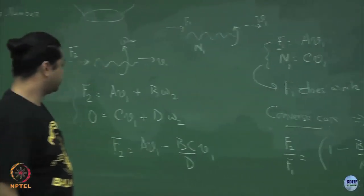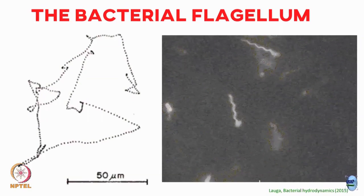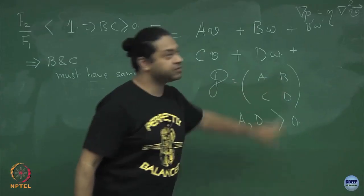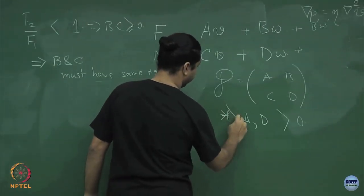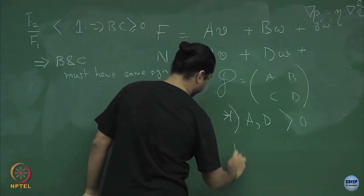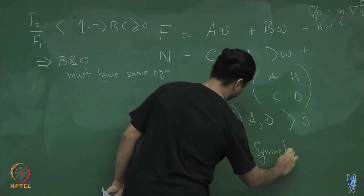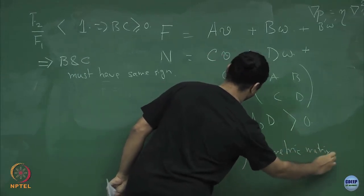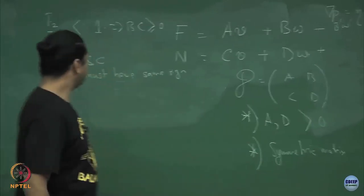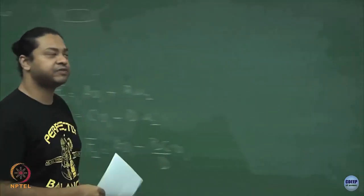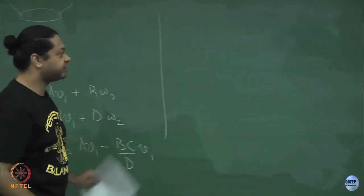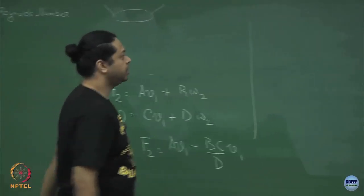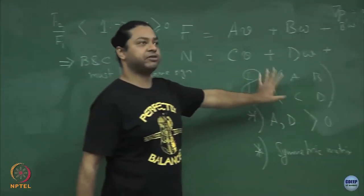Now for the final part of the proof — remember we are trying to prove that this matrix is symmetric, meaning B must equal C. What Purcell said is: one property is that the diagonal elements are positive; the second property is that the matrix is symmetric. What we have shown so far is that B and C must have the same sign.